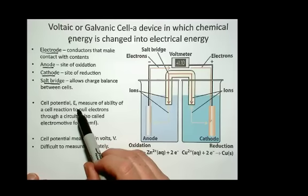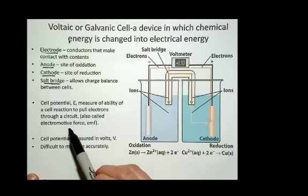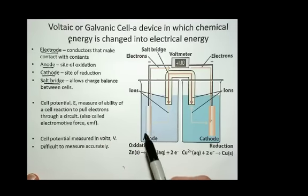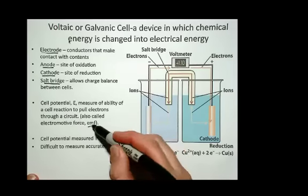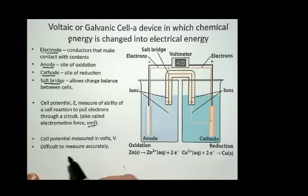The cell potential is the voltage, sometimes abbreviated E, but it's the measure of the ability of the cell reaction to pull the electrons or push and pull the electrons through the circuit. Sometimes it's also called the EMF of the cell. Of course, it's measured in volts, and it's difficult to measure accurately.